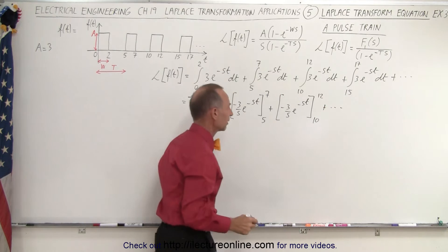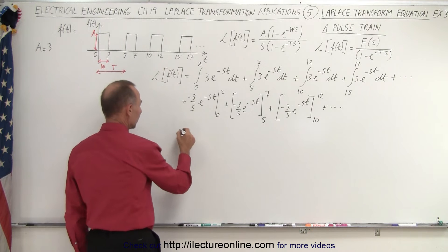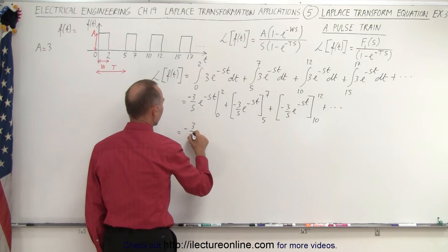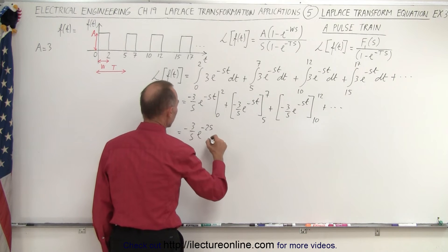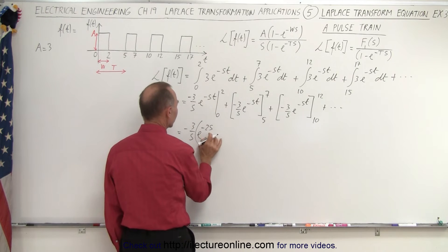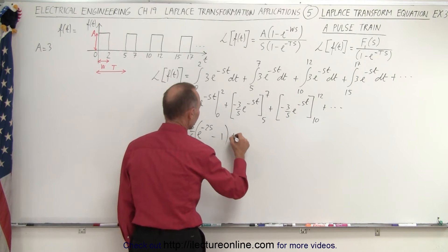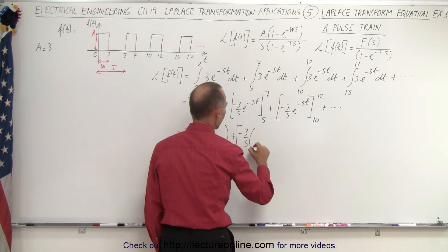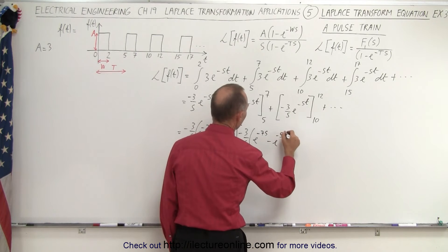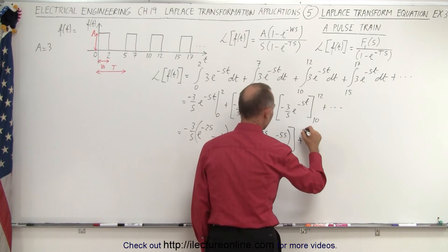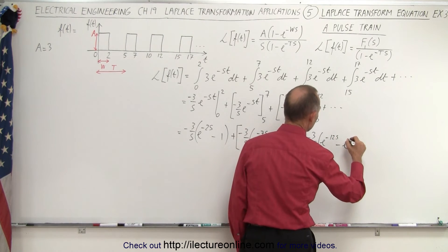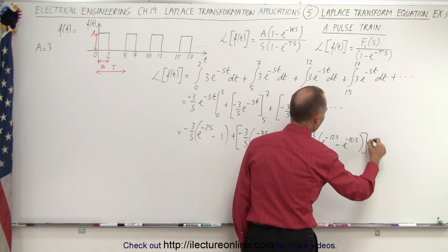You can see the pattern here. This simplifies as follows. Plugging in the limits: minus 3 over s times the quantity e to the minus 2s minus 1. Plus minus 3 over s times the quantity e to the minus 7s minus e to the minus 5s. Plus minus 3 over s times the quantity e to the minus 12s minus e to the minus 10s. The pattern keeps going like that.